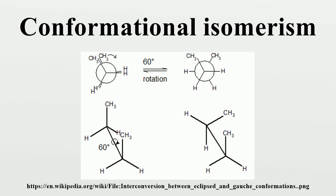In chemistry, conformational isomerism is a form of stereoisomerism in which the isomers can be interconverted exclusively by rotations about formally single bonds. Such isomers are generally referred to as conformational isomers or conformers and, specifically, as rotamers. Rotations about single bonds are restricted by a rotational energy barrier which must be overcome to interconvert one conformer to another. Conformational isomerism arises when the rotation about a single bond is relatively unhindered — that is, the energy barrier must be small enough for the interconversion to occur.